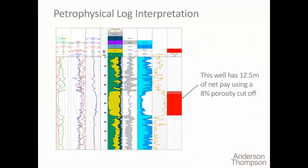Our recommendation was made to lower the landing depth to the bottom third of the interval. This is what the log looked like — really good. Twelve and a half meters of pay using an 8% porosity cutoff and other cutoffs. It was good looking geology.